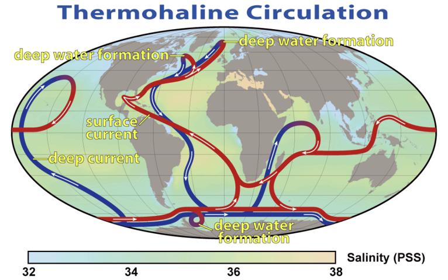Humans first acquired knowledge of the waves and currents of the seas and oceans in prehistoric times. Observations on tides were recorded by Aristotle and Strabo. Early exploration of the oceans was primarily for cartography and mainly limited to its surfaces and the animals that fishermen brought up in nets, though depth soundings by lead line were taken.